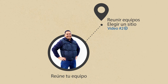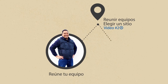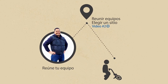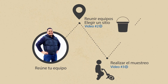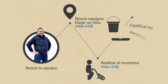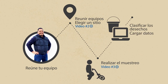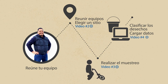Veremos cómo elegir el lugar para tu muestreo en el próximo video. Luego realizarán el muestreo, que veremos en el tercer video. Después categorizará sus datos y los cargará a la base de datos del MDMAP de NOAA, que es lo que veremos en el cuarto video.